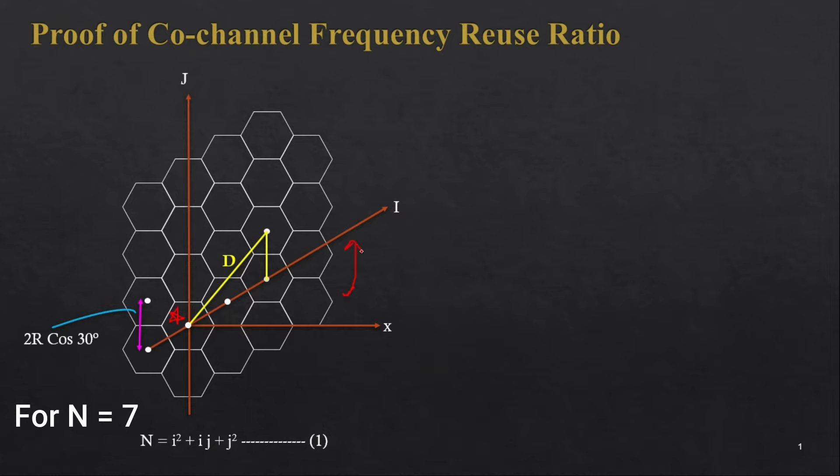Let's move one and two steps on the i-axis — so we are moving two times. Then from this point, we have to move counter-clockwise, and this angle will of course be 60 degrees. If you move one time over here, this will be our co-cell.